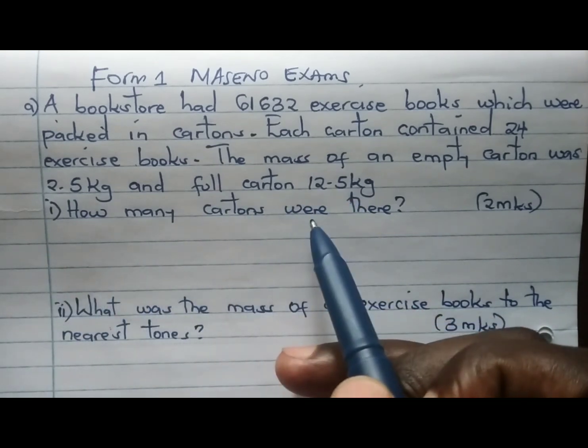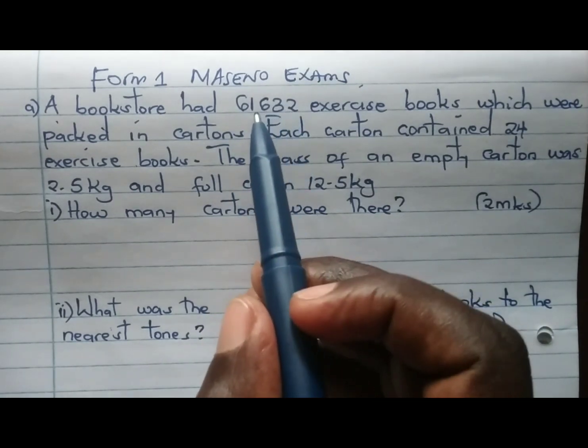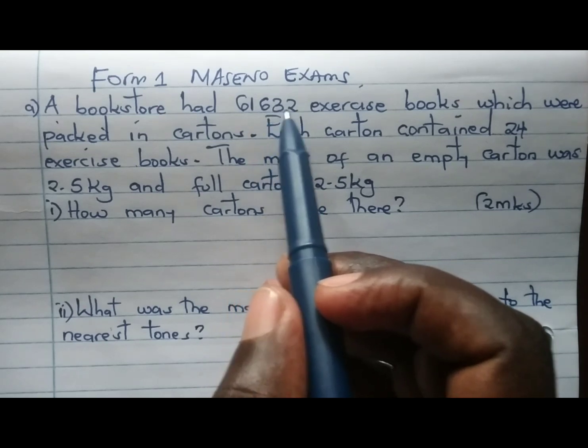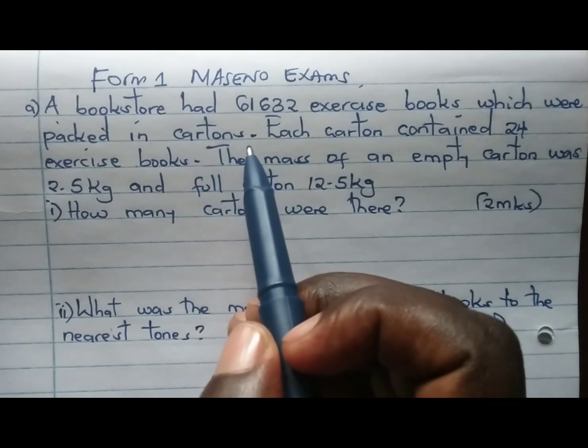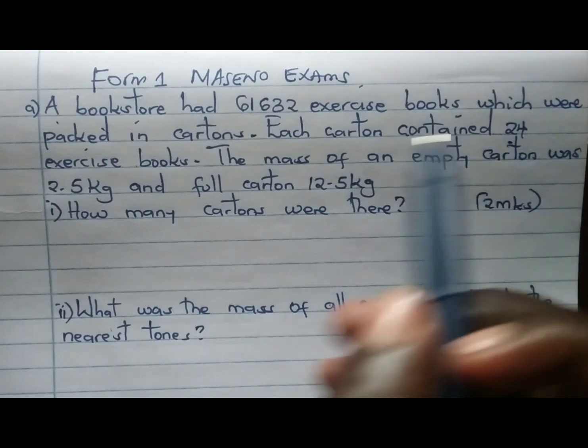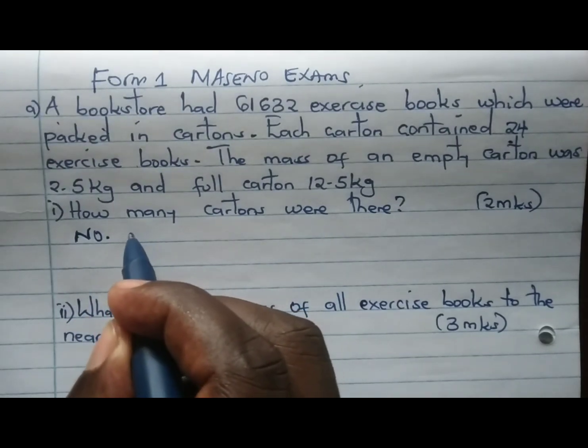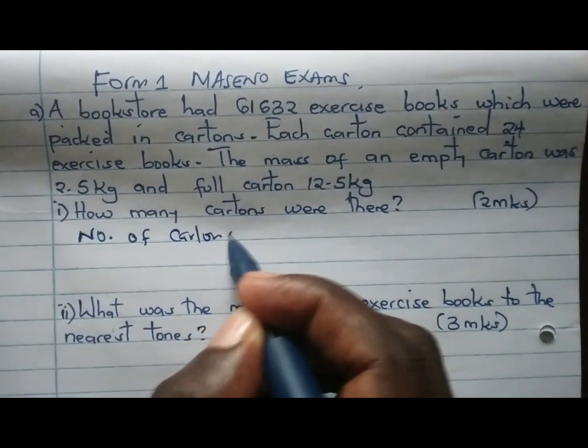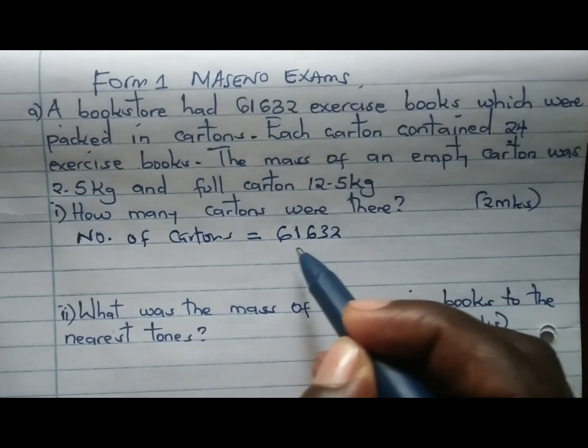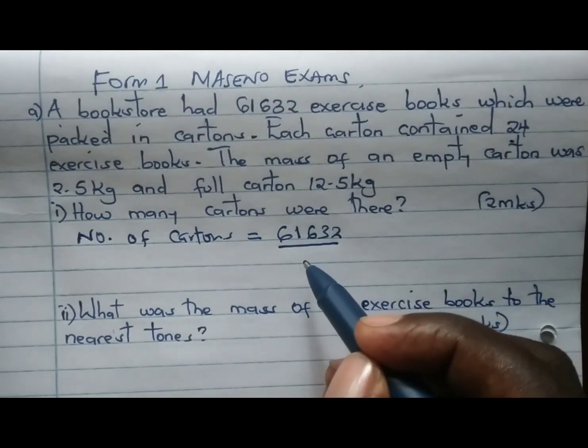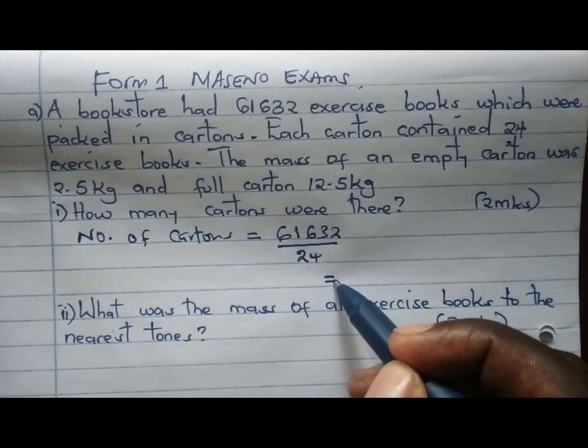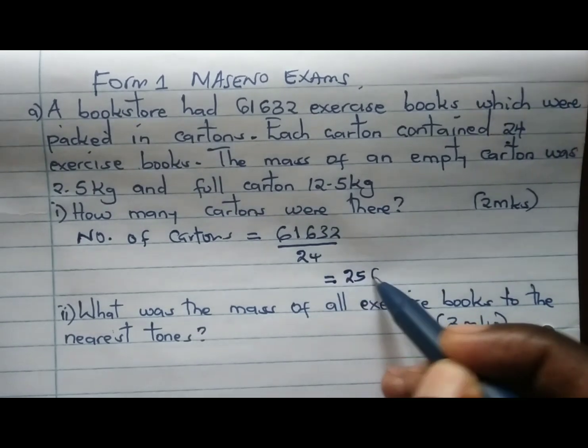How many cartons were there? Remember we have a total of 61,632 exercise books which were packed in cartons and each carton takes 24 exercise books. So to get the number of cartons, number of cartons will be equal to the total number of exercise books, 61,632. You divide by the number of books in each carton which are 24, and this gives us a total of 2,568 cartons.